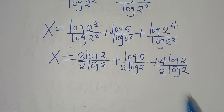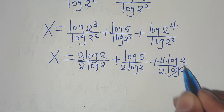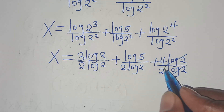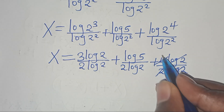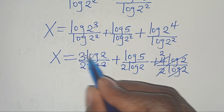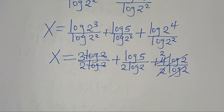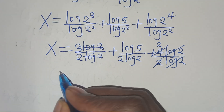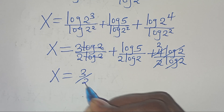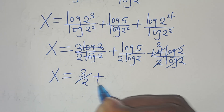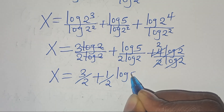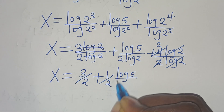Now let's simplify. The log(2) terms cancel in the first and third fractions, giving 3/2 and 4/2 which is 2. So x equals 3/2 plus one-half times log(5) divided by log(2).